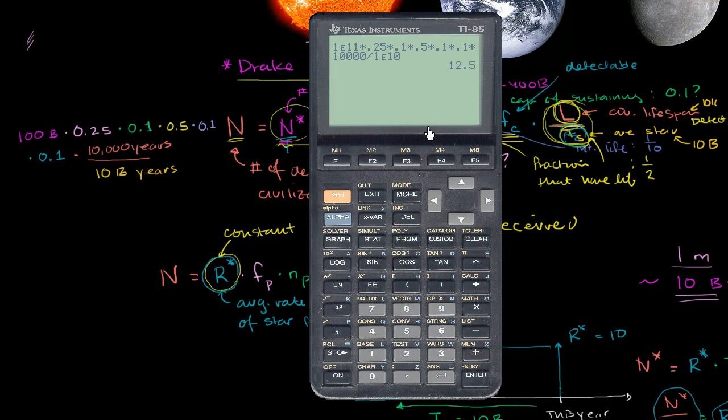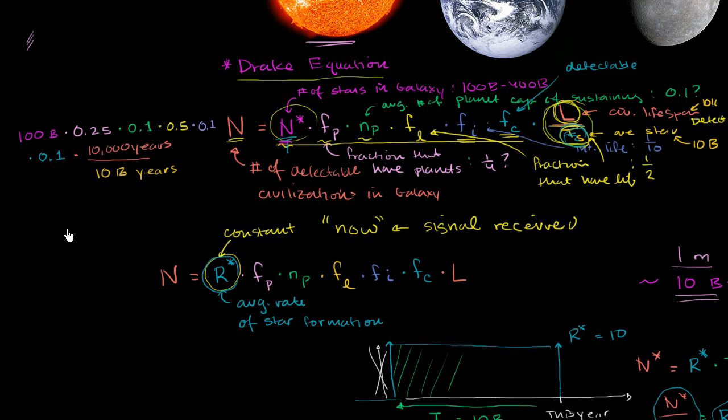We get 12.5, which is kind of a neat number, but you know, these are heavily dependent on this. So we're saying, given these assumptions, there should be 12.5 detectable civilizations in our galaxy right now.